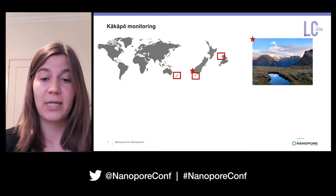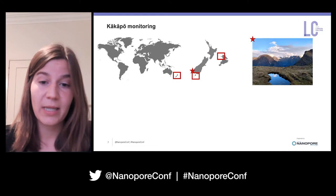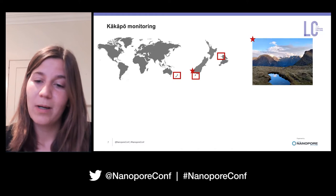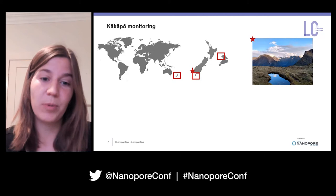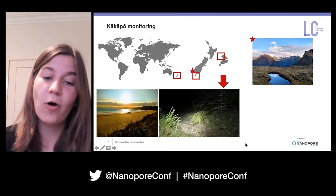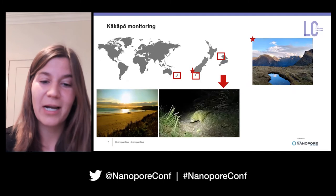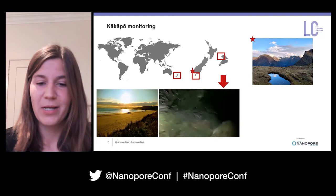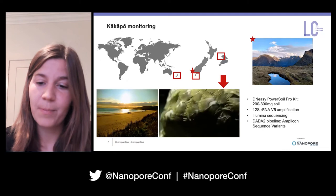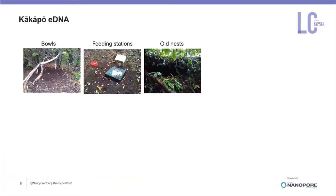We set up an environmental DNA monitoring approach together with the recovery team and the Maori iwi, to monitor the future kakapo population as it expands, and also to see if we can find evidence of a remnant population in the remote Fiordland area. I was lucky enough to go to Whenua Hou in 2019 and sample soil. I extracted DNA using a standard kit, amplified the 12S ribosomal RNA region, sequenced the amplicons, and performed taxonomy classification via amplicon sequence variants.